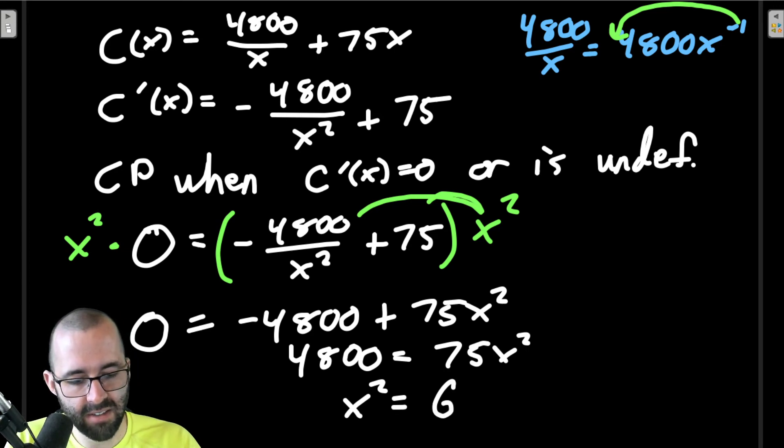Left hand side is zero, right hand side we distribute, the x² cancels out to give negative 4800, the second one gives 75x². Add 4800 to both sides and divide by 75, which is 64. Square root both sides, you get x equals plus or minus 8.